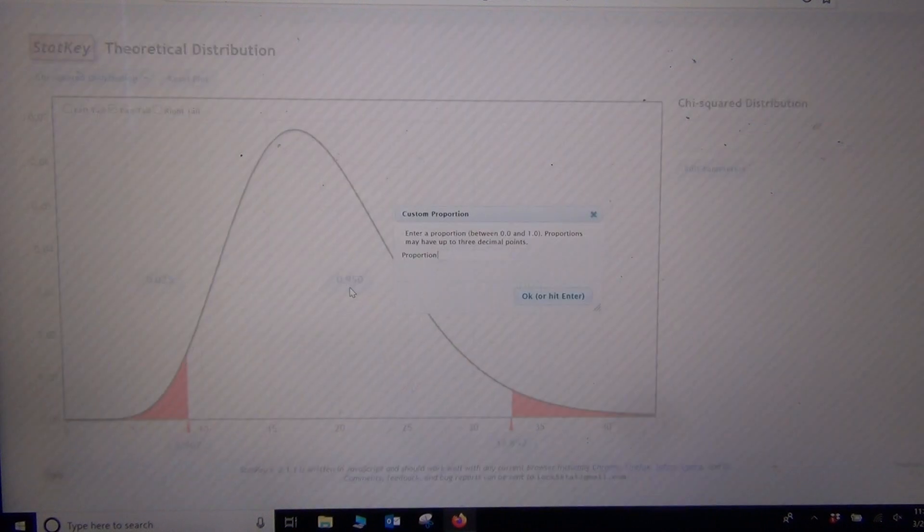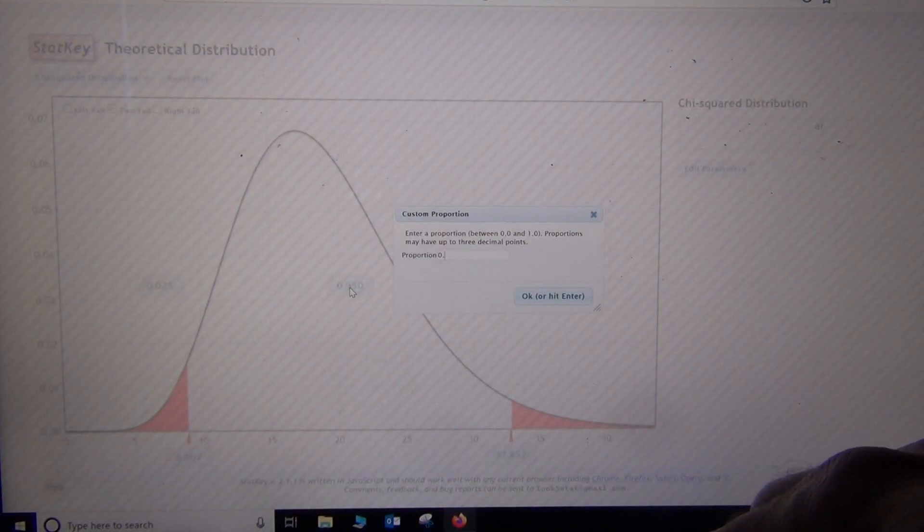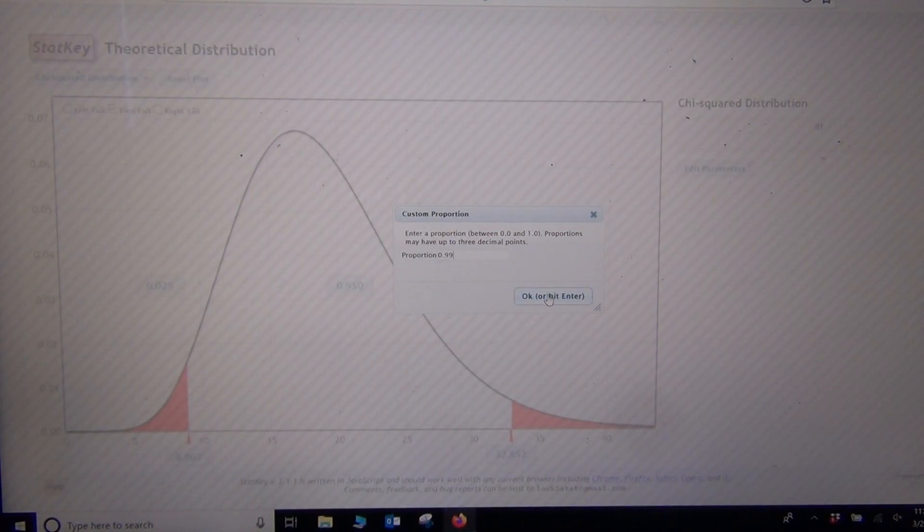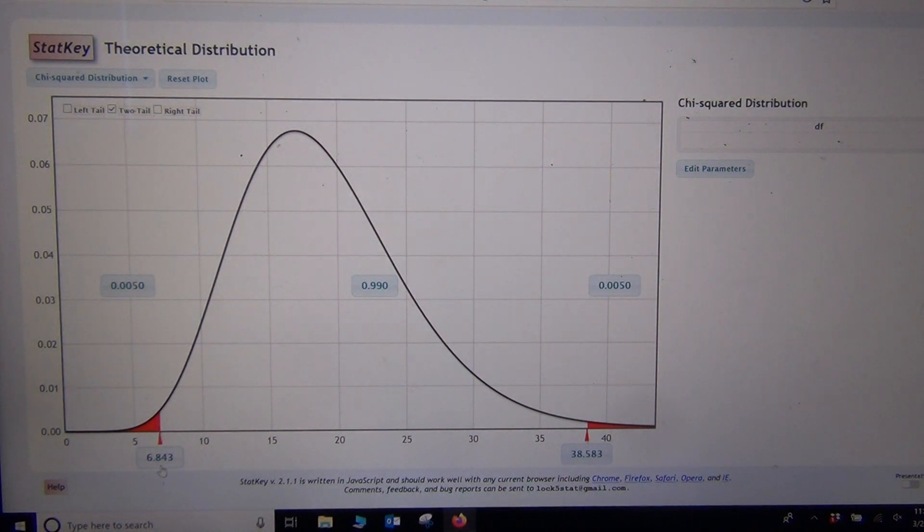You can change it to 90 or 99 if you wanted. So if I did 99 there, now I got those two. Notice they're both positive. The lower critical value is 6.843, and the upper critical value is 38.583. These are not confidence intervals. These are critical values.